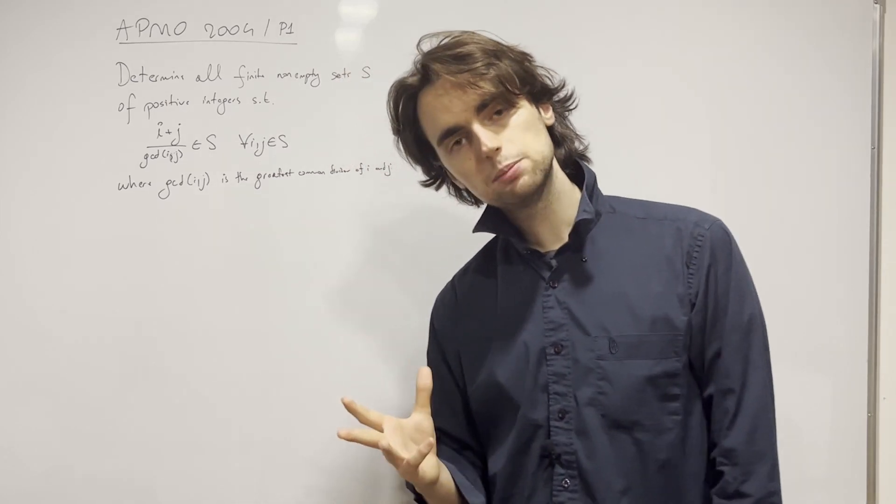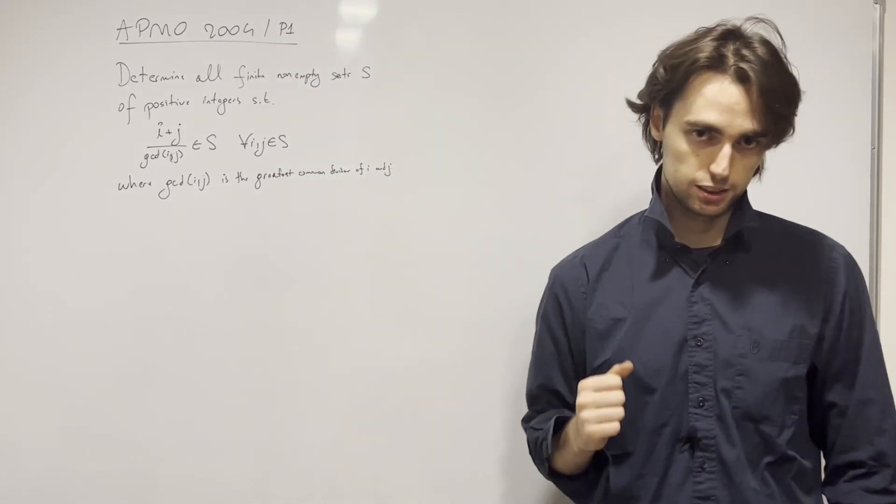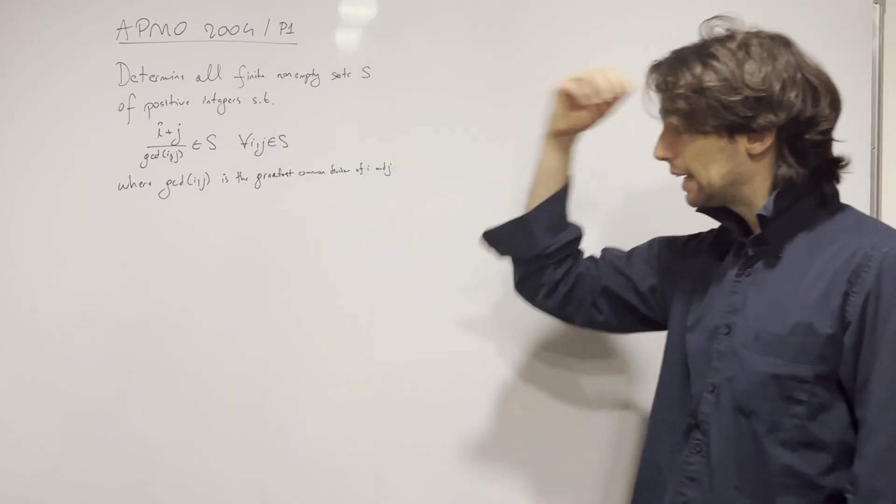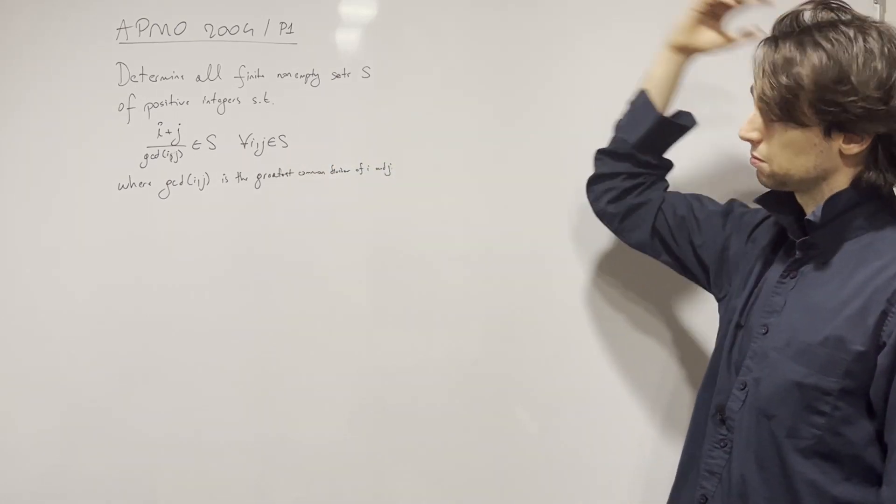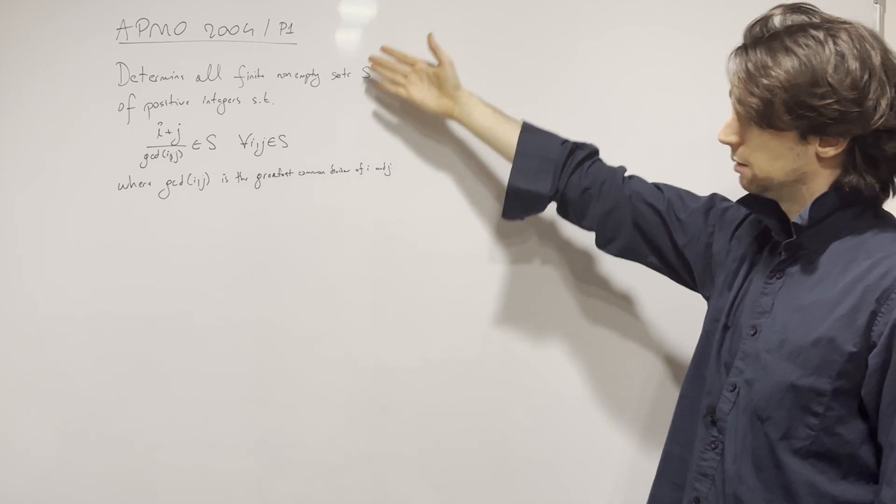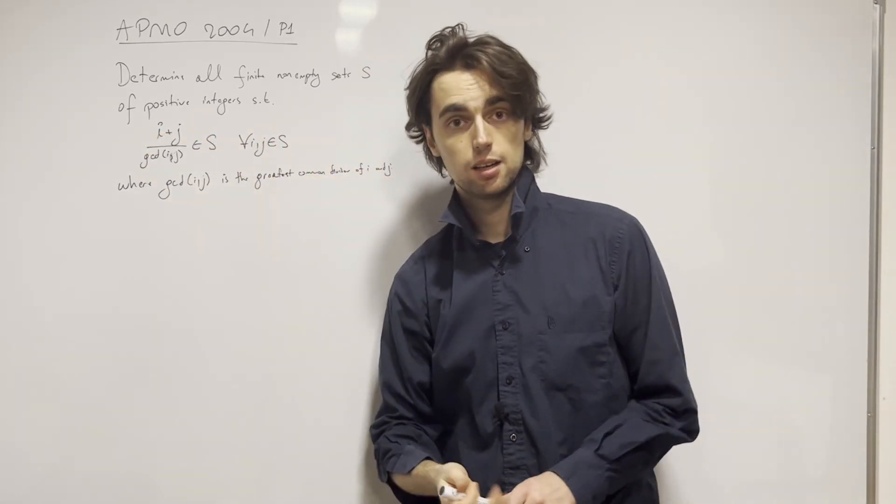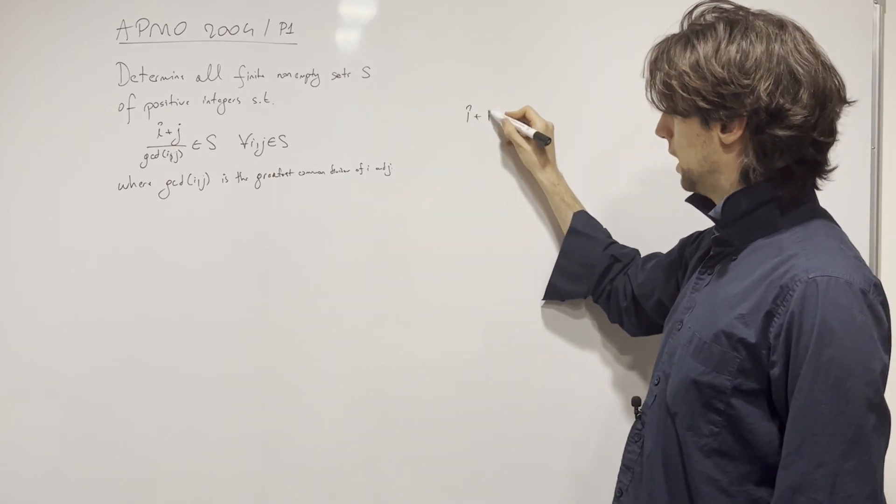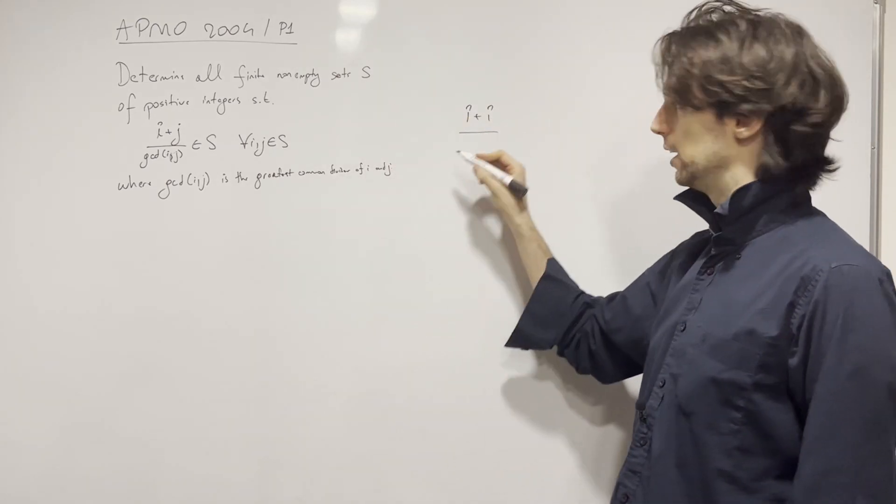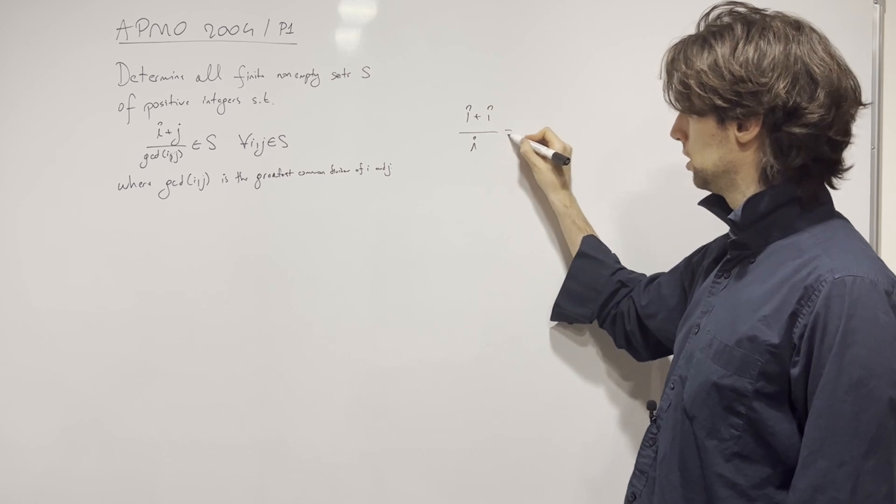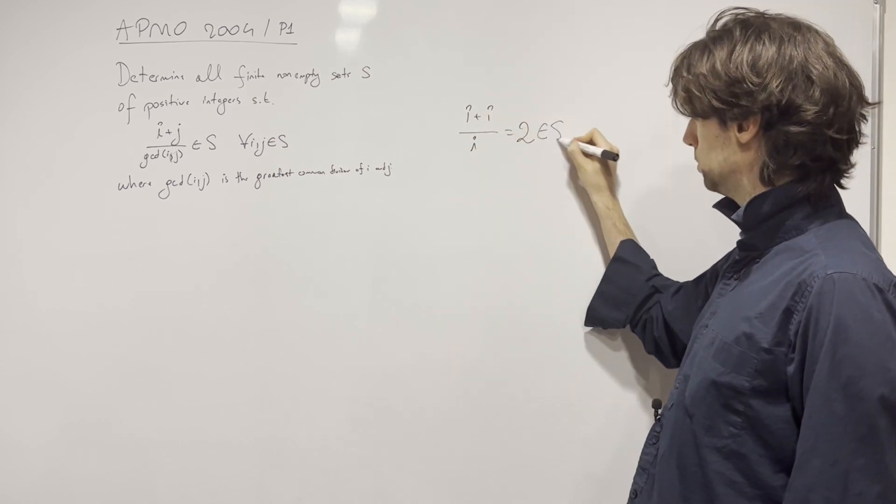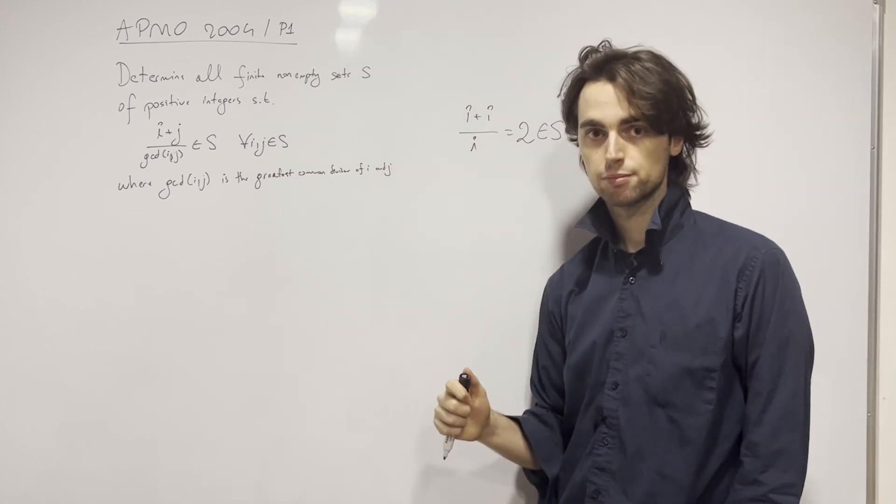So what is maybe the first thing you notice in this problem? Well for me, it's that I can pick i equals j. And then I have the GCD of i and i, which is going to be i. I have (i+i)/i, or (2i)/i, so I know that 2 is an element of S. Just like that.